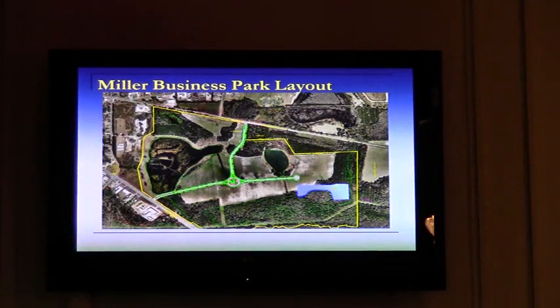This map shows the Miller Business Park as it was laid out. The green is the existing street line system. That yellow line is the current park boundaries, and you see in the upper right corner the irregular shaped property that they're wanting to annex and rezone. You can see it makes more of a compact rectangle.